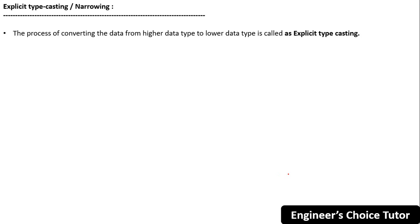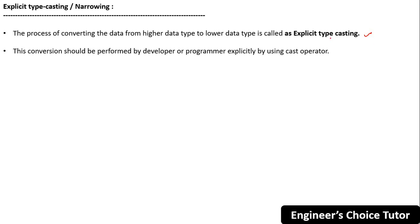Now the topic is explicit typecasting, also known as narrowing. The definition: the process of converting data from a higher data type to a lower data type is called explicit typecasting. This conversion must be performed by developers or programmers explicitly using a cast operator. There is a chance of loss of data in this type of casting.